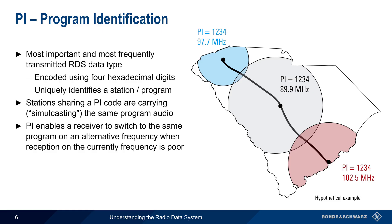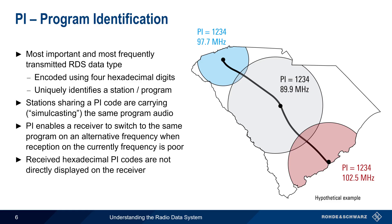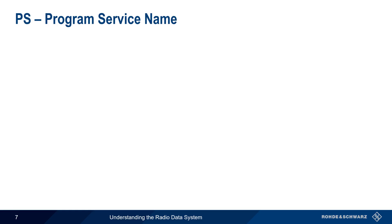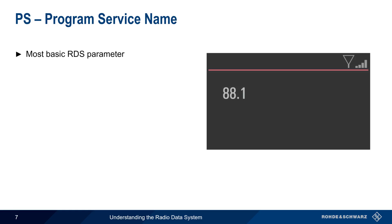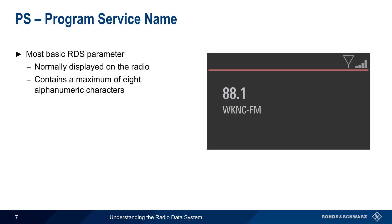It is also important to keep in mind that the received hexadecimal PI codes are not directly displayed on the receiver. Another basic RDS parameter is the program service name, which is normally displayed on the radio. This consists of up to eight alphanumeric characters that identify the program, and these characters usually show a user-friendly station ID.